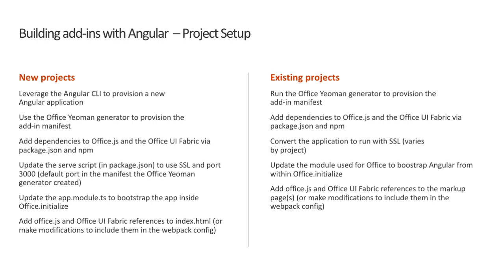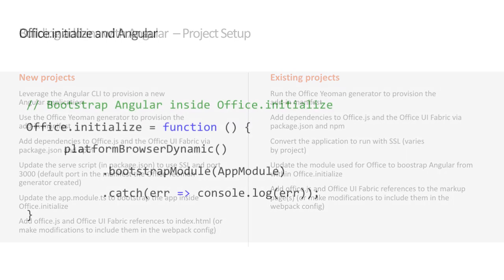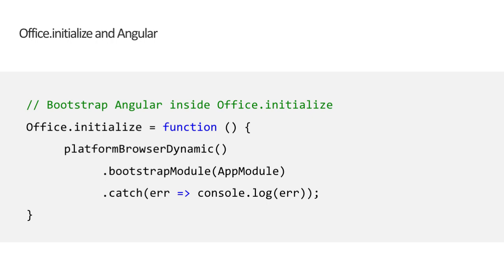For existing projects, you'll follow almost the exact same steps as a new project, except you remove the Angular CLI process. One of the most important aspects of using a modern client-side framework with Office add-ins is how the framework is bootstrapped to the markup. Every page that loads the add-in must call Office.initialize before running other scripts — we saw this earlier with React. It's a best practice to bootstrap the Angular application to the DOM within the Office initialize callback. For projects provisioned with the Angular CLI, this will most likely be in the main.ts file that serves as the entry point.